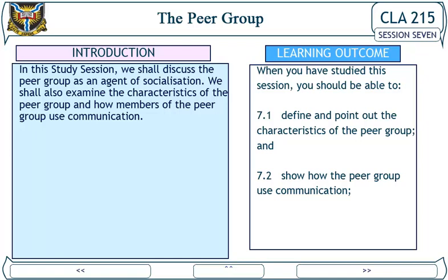Learning Outcome: When you have studied this session, you should be able to: 1. Define and point out the characteristics of the peer group, and 2. Show how the peer group uses communication.